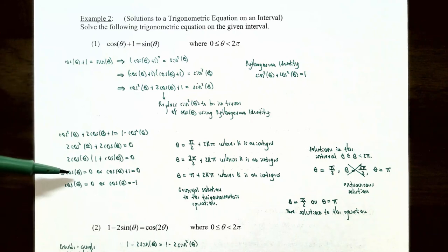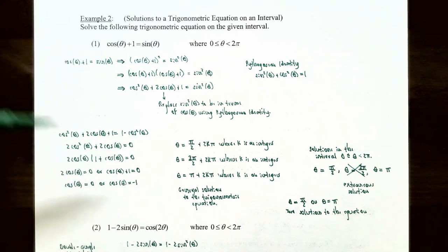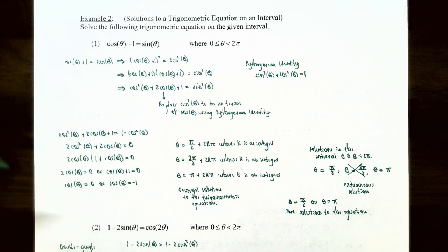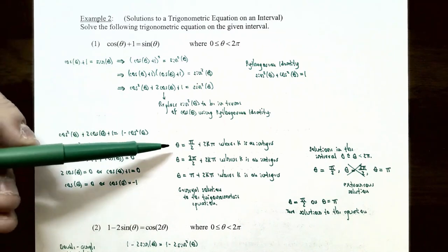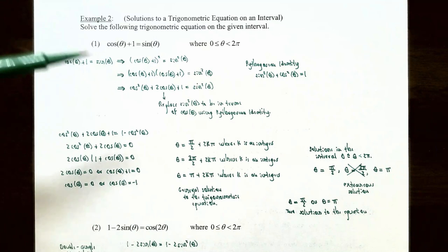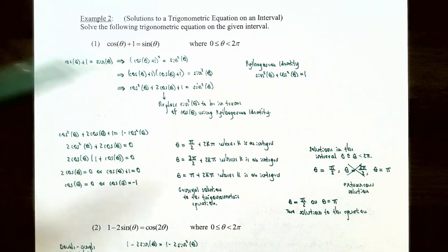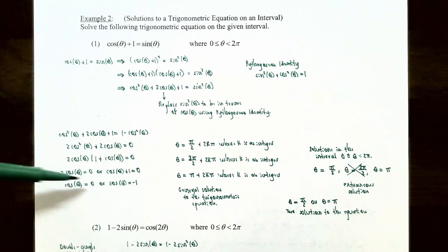Setting each factor to zero gives: two times cosine theta equals zero, so cosine theta equals zero; and cosine theta plus one equals zero, so cosine theta equals negative one. For cosine theta equals zero, the angles are pi over two and three pi over two. The general solution is theta equals pi over two plus two pi k, or theta equals three pi over two plus two pi k, where k is an integer.